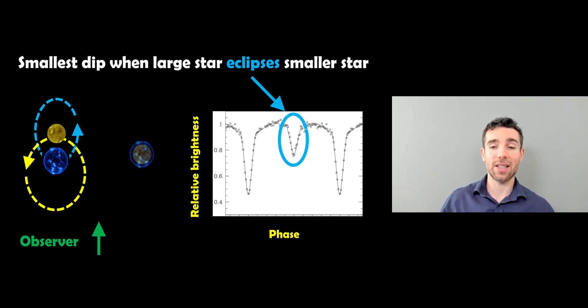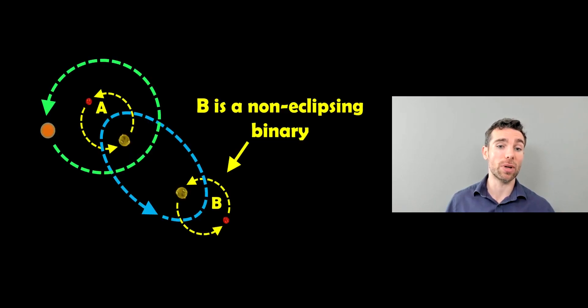If the two stars were exactly the same size and same temperature, you'd get the same dip in brightness. But that's not often the case. They're generally slightly different in size or maybe considerably different. So that's an eclipsing binary, which is what the planet actually orbits.